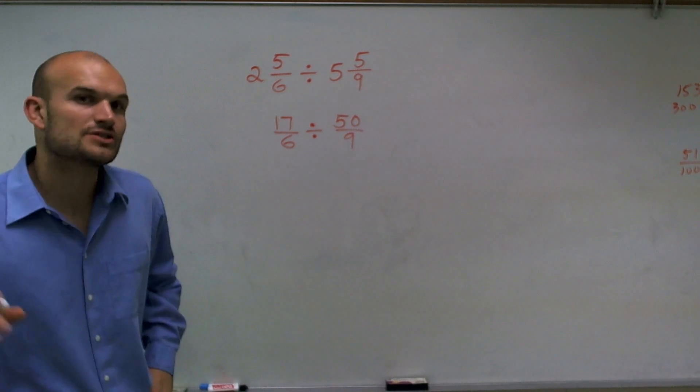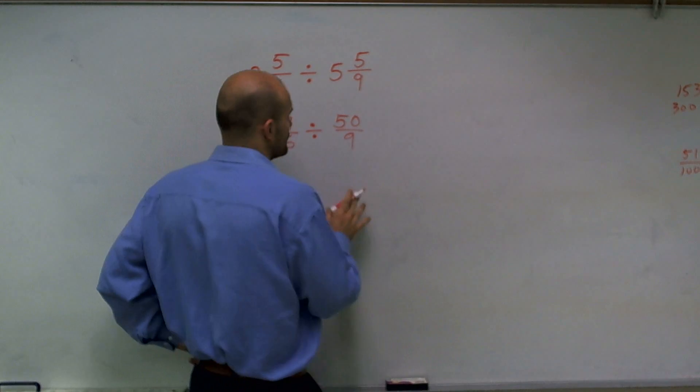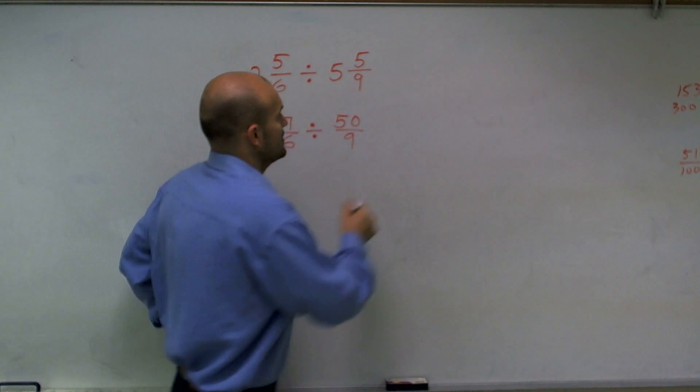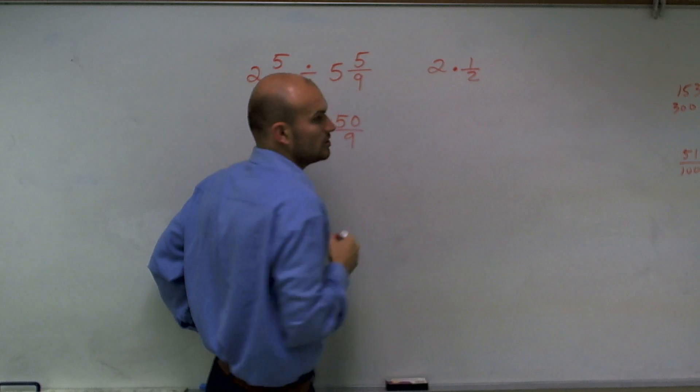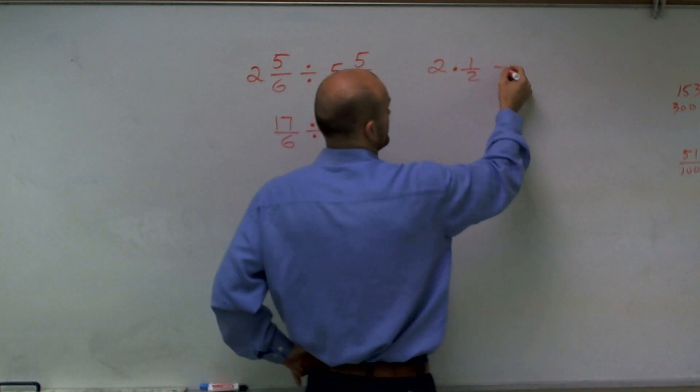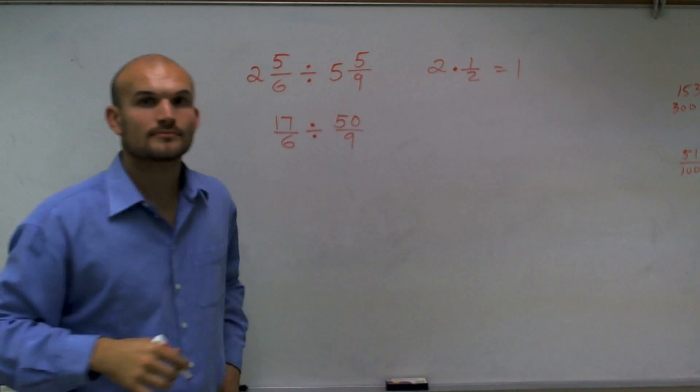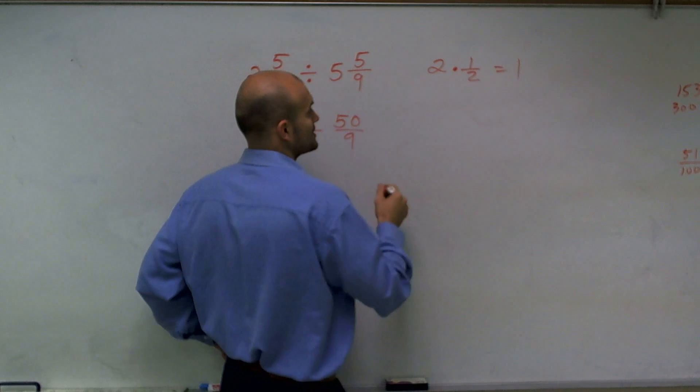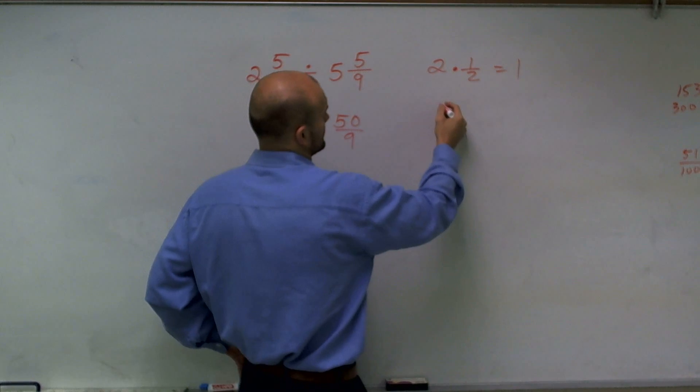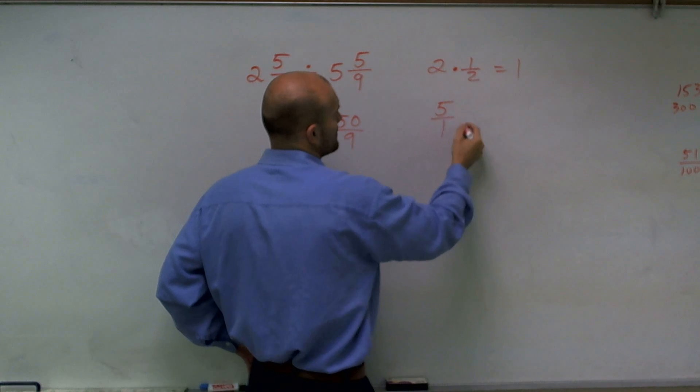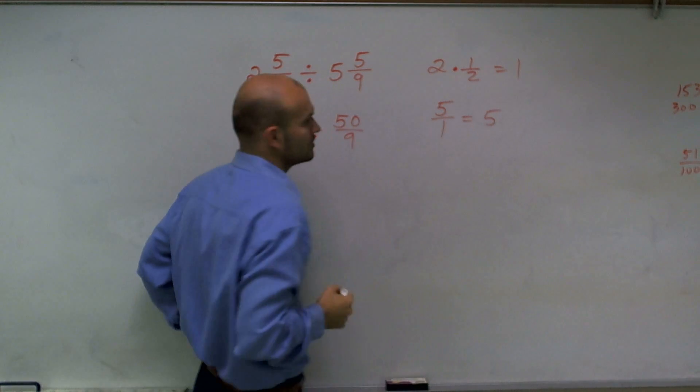Now, I'm going to remind you of a couple things before I show you how to do this. First thing I want to remind you is any number multiplied by its reciprocal equals 1. The next thing I want to remind you is any number divided by 1 equals your numerator.